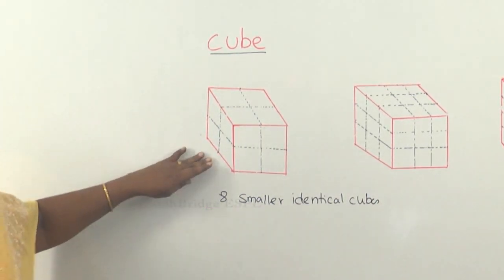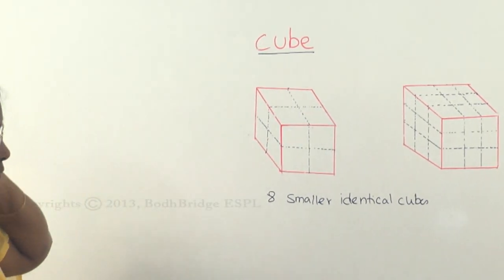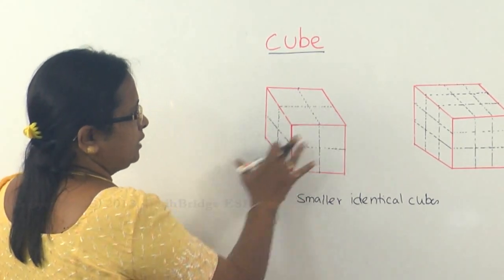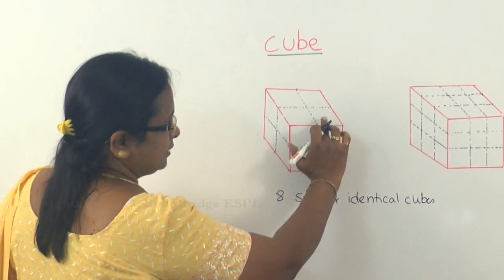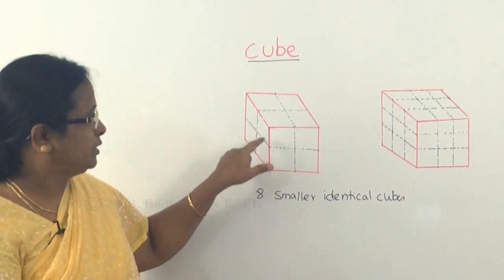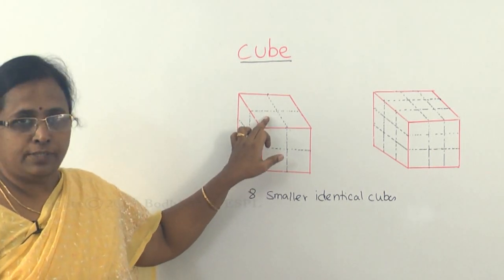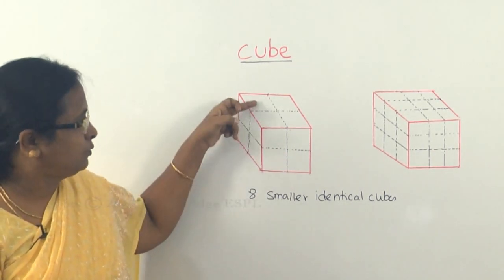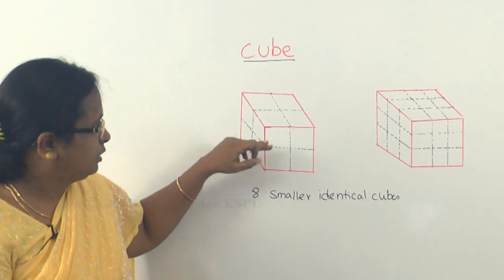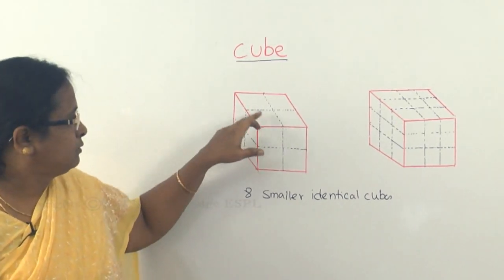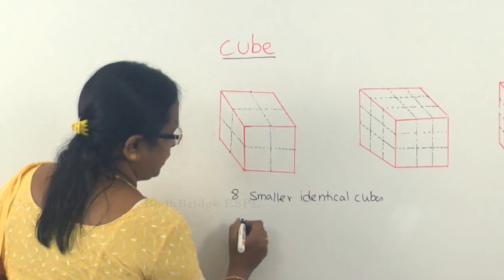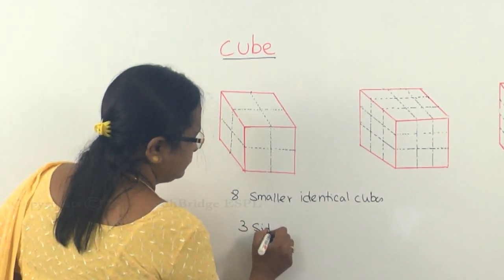This is the case where you cut it after painting. The question is: after painting, how many of the sides will be three-sided painted? When you paint the entire thing and then cut it, this particular cube forms the outer layer. In a smaller cube, the exposed faces are three, and the remaining three — behind this, behind this one, and below this — are hidden sides. So the only faces which are exposed is three, and that is only three-sided painted.